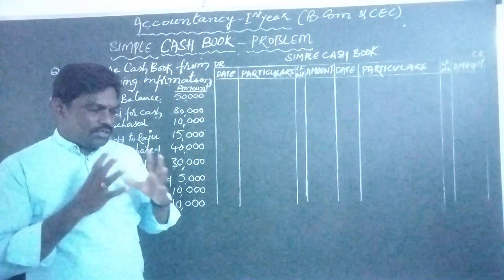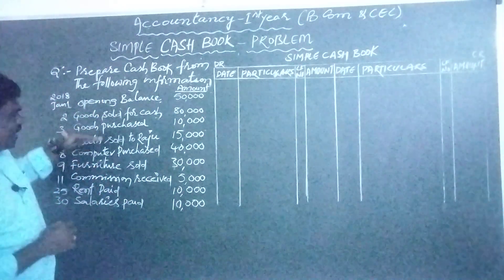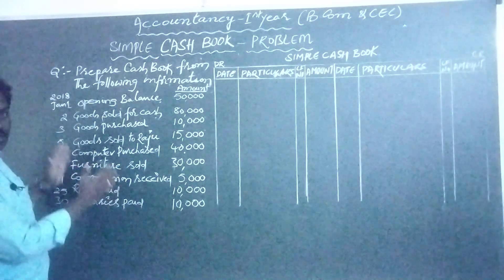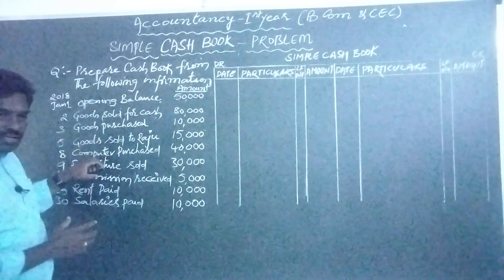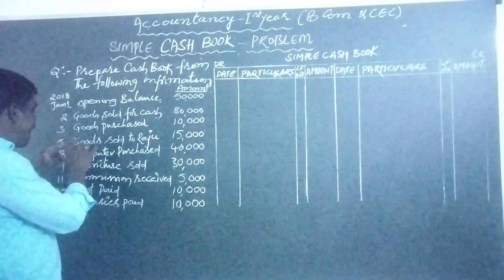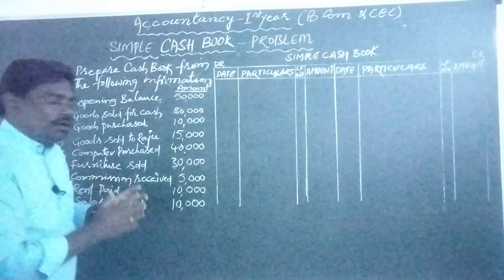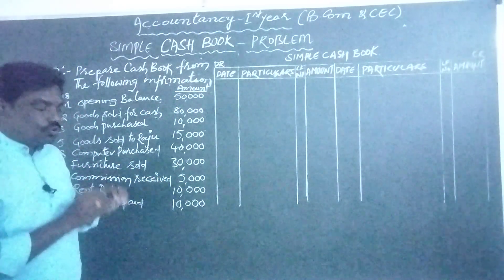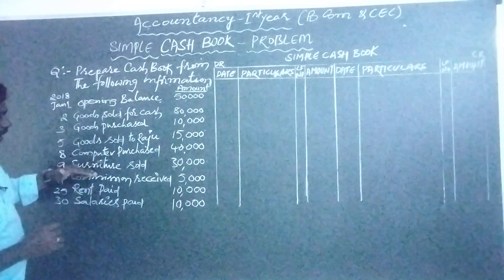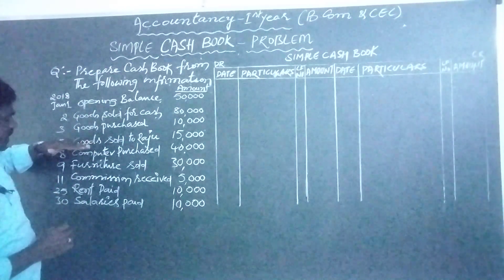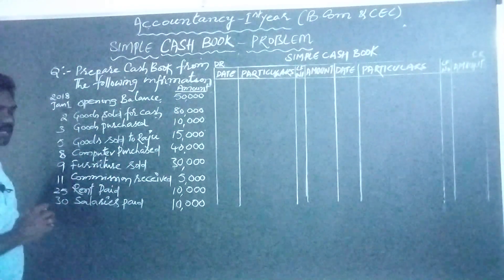The second step: you have to identify the cash transactions as well as credit transactions in the given problem. If there are any credit transactions in the problem, they should be highlighted using an underline, tick, or something similar. Those transactions should be avoided — they should not be recorded while we are preparing the cashbook.